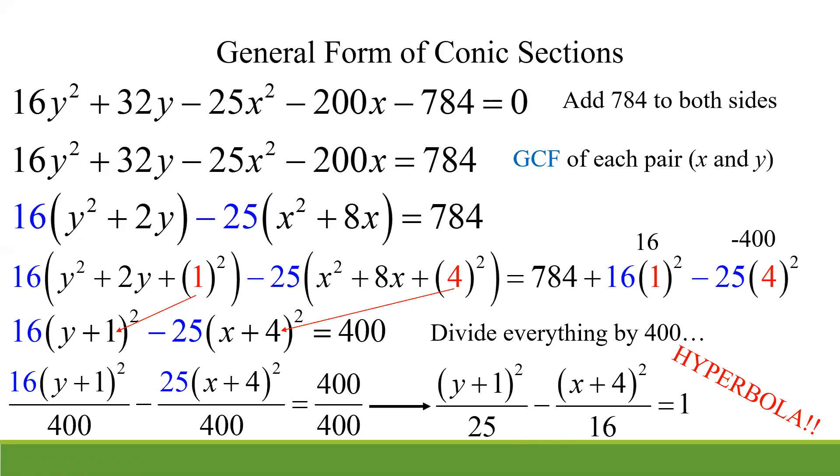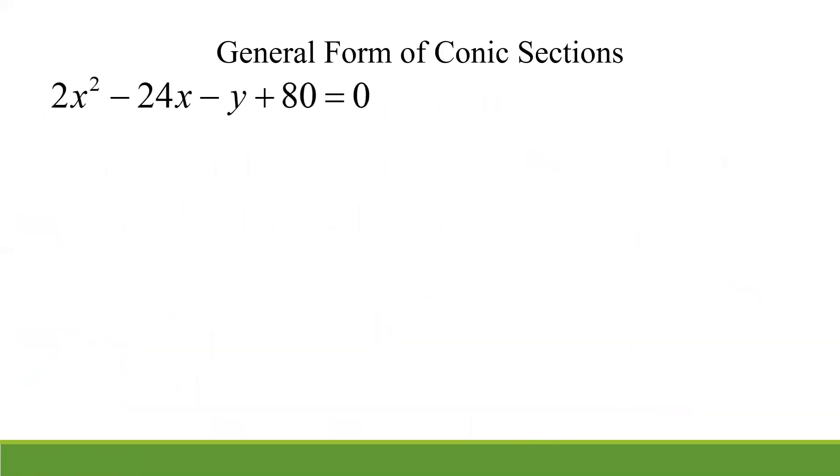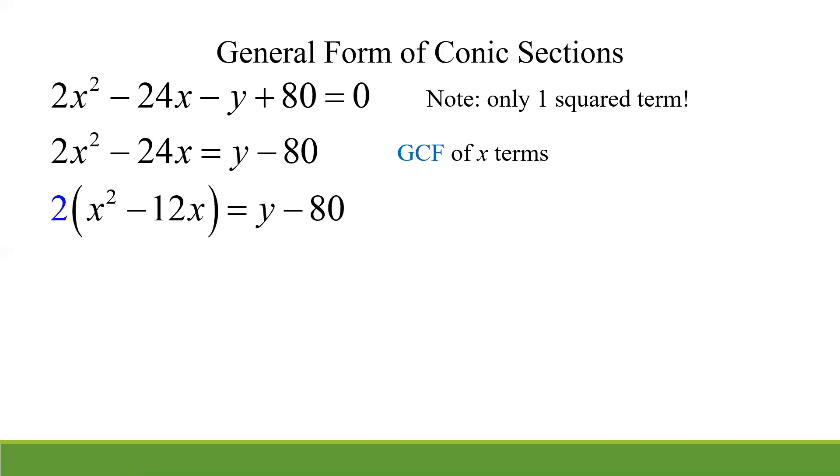The last one I want to do for you here is one with only one square term. A little tiny wrinkle here. Not much of one. But if you do only see one squared term, just keep that pair that's squared on one side and get everything else together because the linear term really doesn't affect the whole thing. So in this case, I'm going to isolate the x's. And I'm going to get the y and the 80, that negative 80 to the other side. But now, I just do the same thing. I'm still going to complete the square on the x's on whatever it is squared. So take that GCF out of 2. Divide your b value by 2. So you got negative 12 divided by 2 is negative 6. Take care of that on both sides.